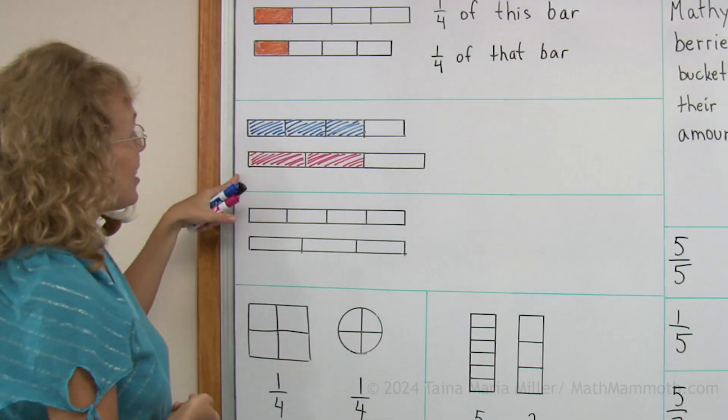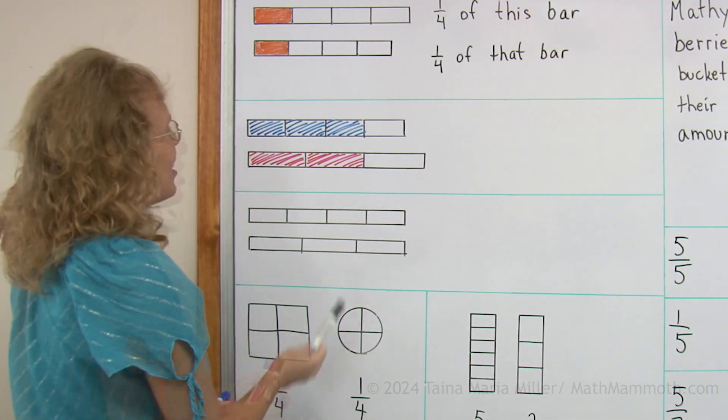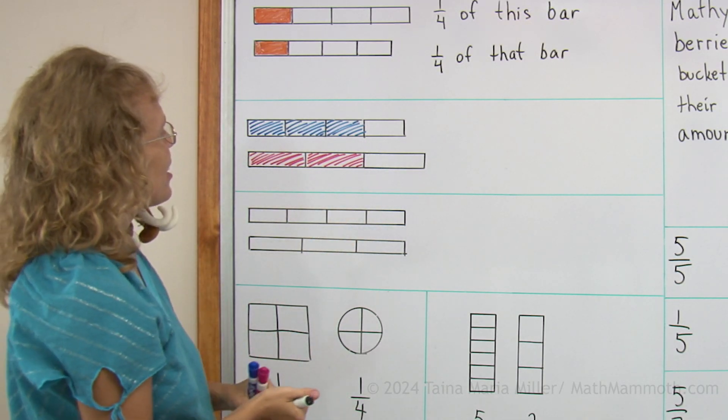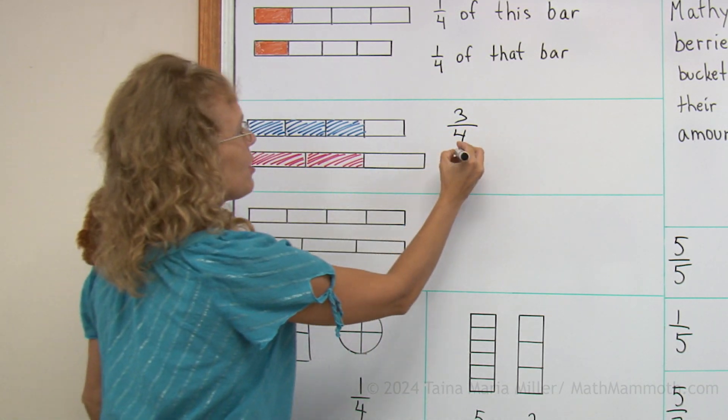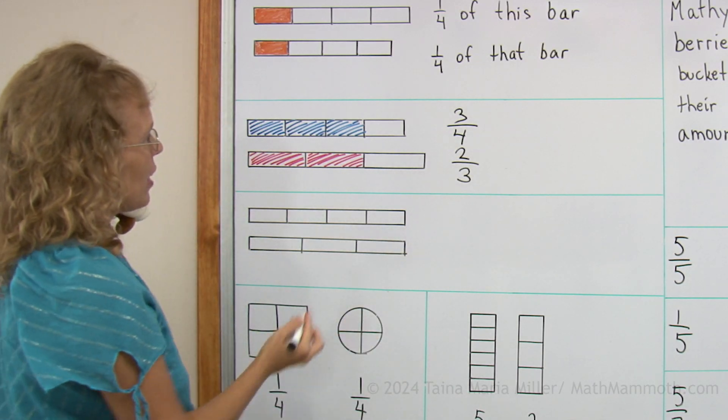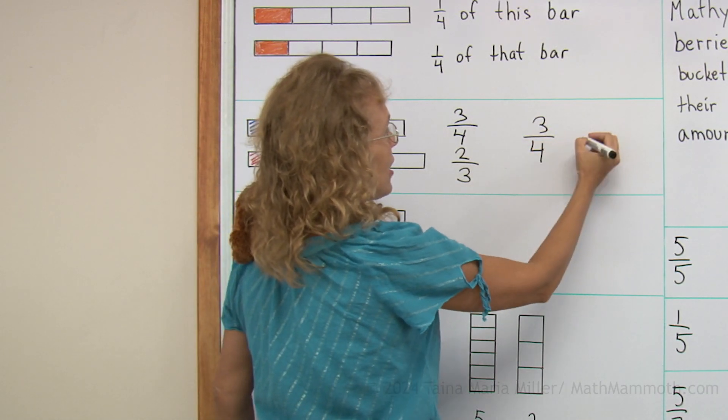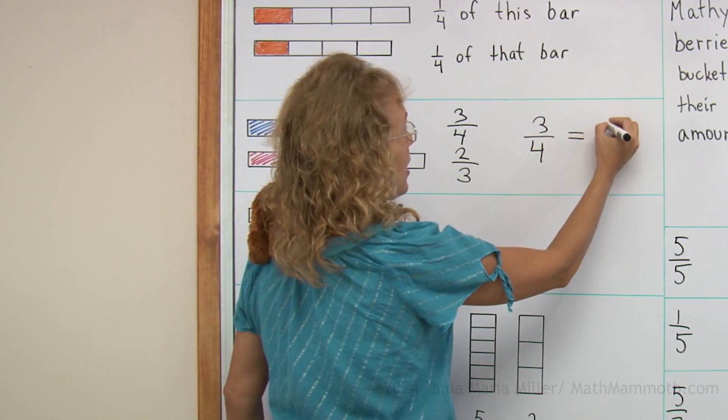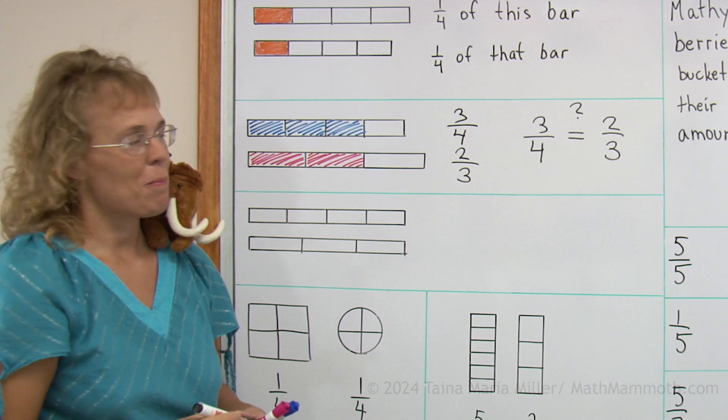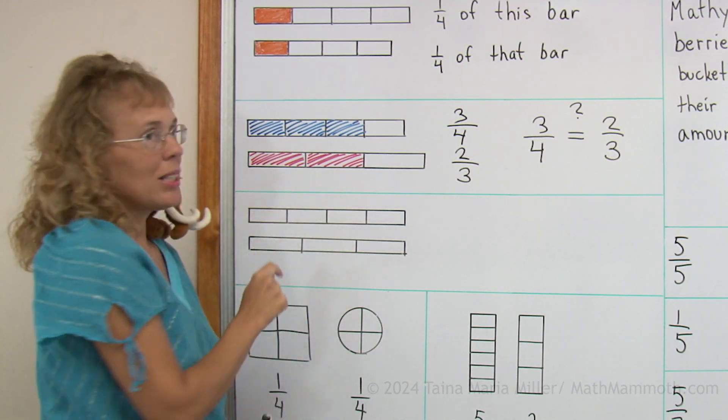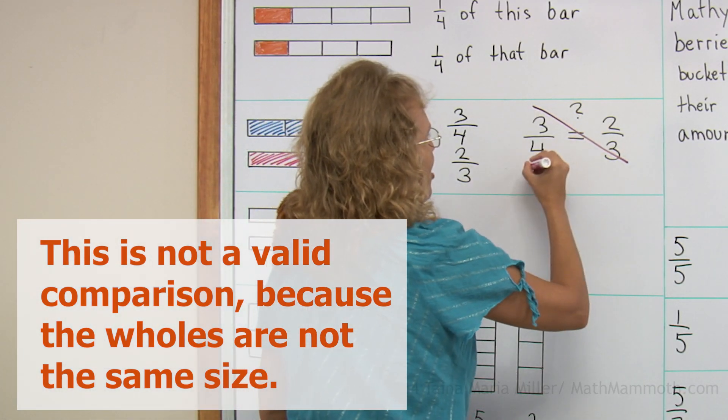We see the same problem here. We have two fraction bars, but they are not the same length. My first fraction bar here is showing three-fourths. And this one is showing two-thirds, right? And they look like they are the same amount. But does that really mean that three-fourths is equal to two-thirds? Is it so? It is in this case, but it is not in general. It is not true in general for fractions. So let's cross this out so you don't think that.